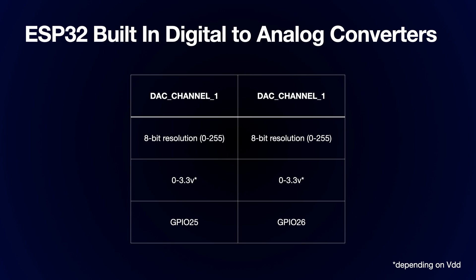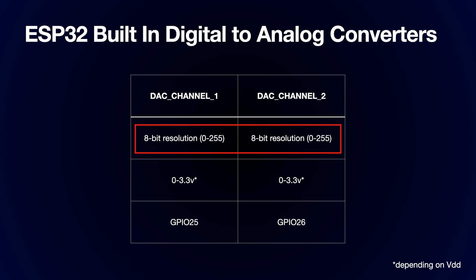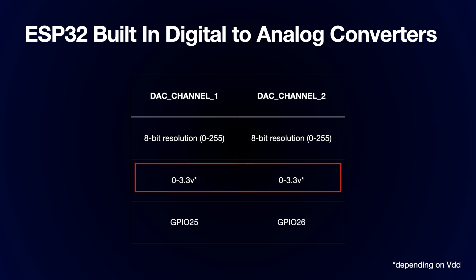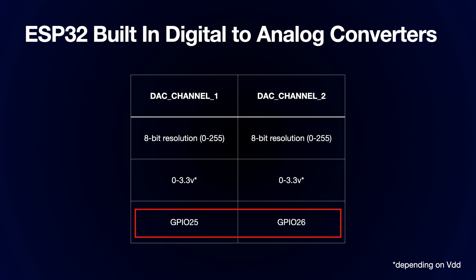There are a few things to note about the digital-to-analog converters on the ESP32. There are two channels available: DAC1 and DAC2. Both channels support 8-bit resolution, so we can set them to a value between 0 and 255. The output voltage range is from 0 volts to VDD, so typically 0 volts to 3.3 volts. One big difference from what you may be used to is that the GPIO pins are fixed — channel 1 outputs on GPIO25 and channel 2 outputs on GPIO26.